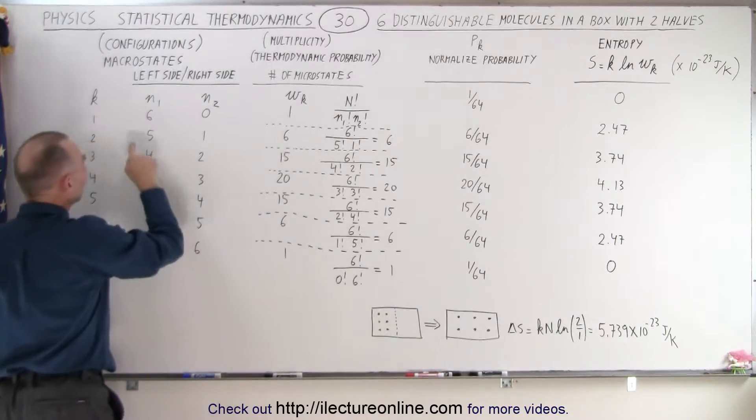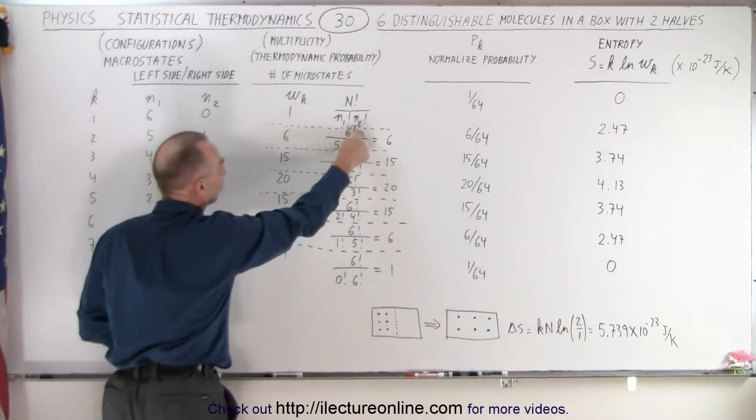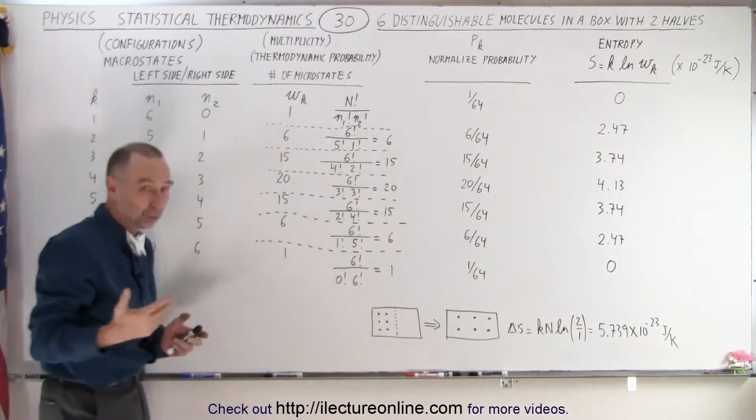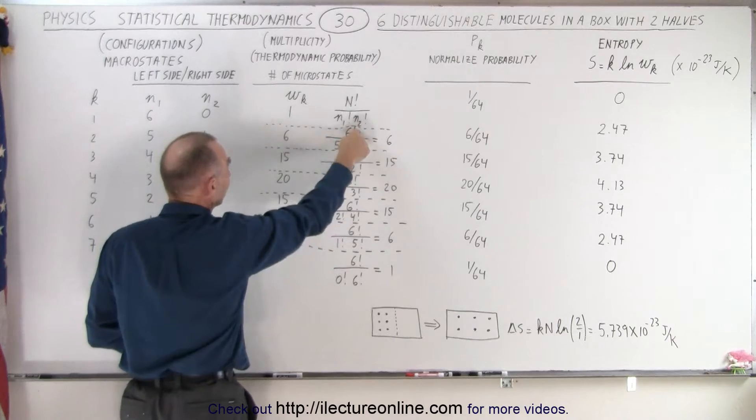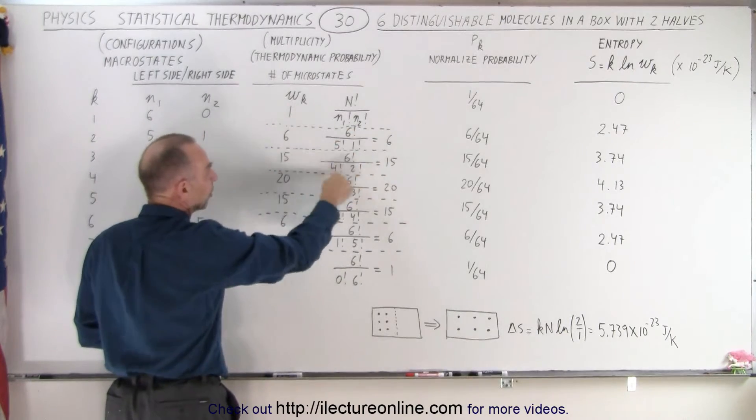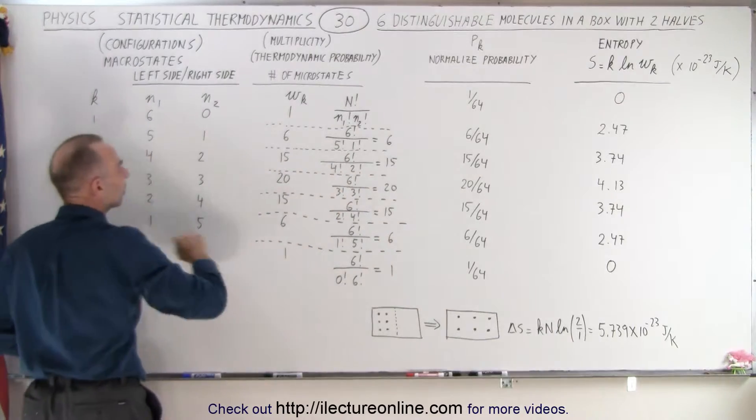So in the case where we have 5 and 1 it would be 6 factorial divided by 5 factorial divided by 1 factorial. Of course 1 factorial is equal to 1. And 6 factorial divided by 5 factorial is simply equal to 6. Here's how we calculate the number of microstates for this microstate.